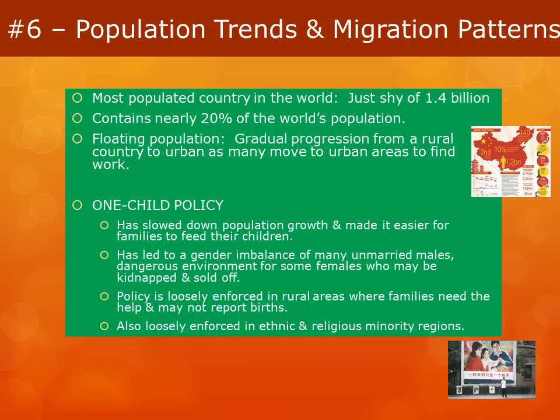To help control this massive population, several decades ago the government instituted the One Child Policy. It has been effective at slowing down population growth and has made it easier for families to feed their children with less cause for famine. However, it has also led to a great gender imbalance, which has led to many unmarried males and a dangerous environment for females in some parts of the country. The policy has been much more loosely enforced in rural areas, where families need help on the farms, as well as in areas of ethnic and religious minority domination.